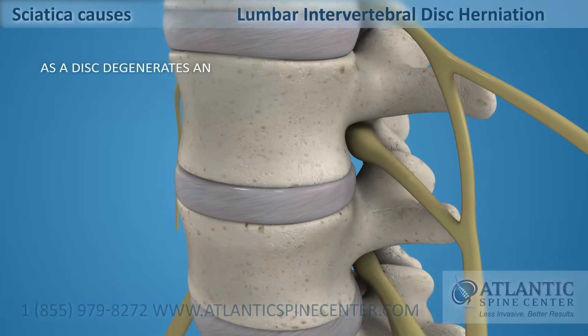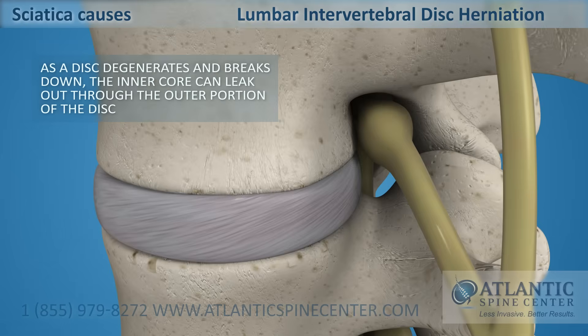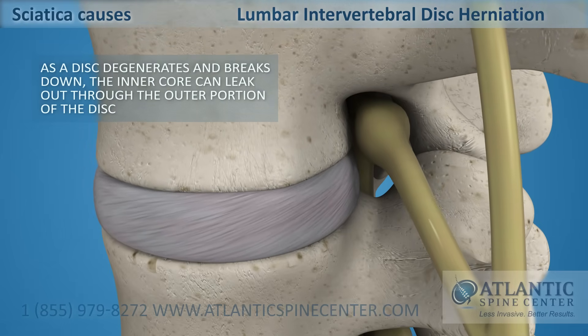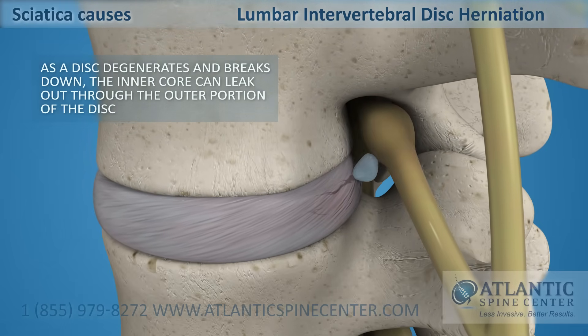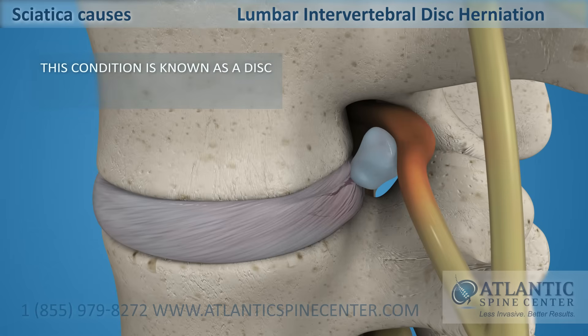As a disc degenerates and breaks down, the inner core can leak out through the outer portion of the disc. This condition is known as disc herniation, which puts direct pressure on the nerve.